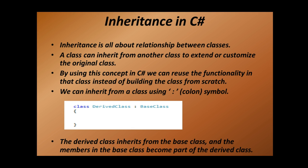What is inheritance? Inheritance is all about the relationship between classes. A class can inherit from another class to extend or customize the original class. By using this concept in C#, we can use the functionality in that class instead of building from scratch. This is the syntax for inheritance in C# — we make a class inherit from another class by using the colon symbol. A derived class inherits from a base class, and the members in the base class become part of the derived class. The class from which a class inherits is called the base class or parent class, and the derived class is also called the child class.